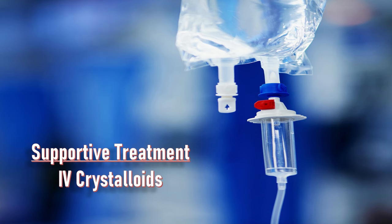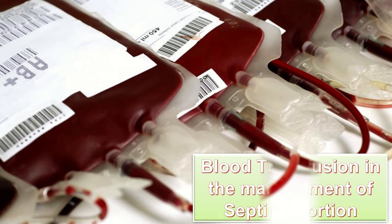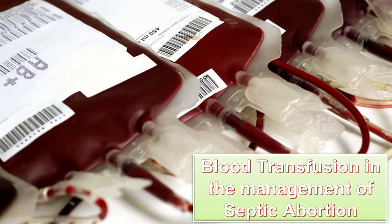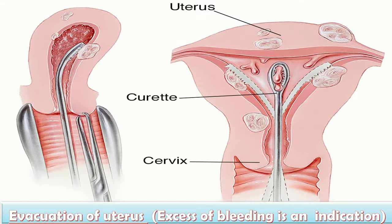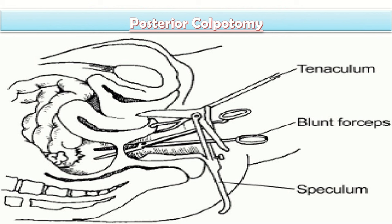Supportive treatment includes IV crystalloids. As these patients may present with very low hemoglobin, blood transfusion may also be required. Evacuation of the uterus is important and is held within 48 hours once infection is controlled and localized, but excessive bleeding is an indication for immediate evacuation. Posterior colpotomy is performed if there is a boggy mass in the posterior fornix due to pelvic abscess localized in the pouch of Douglas.